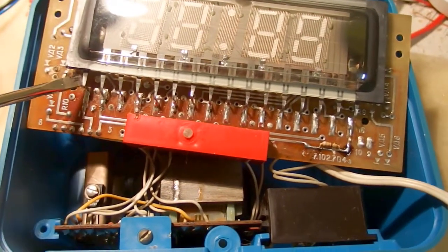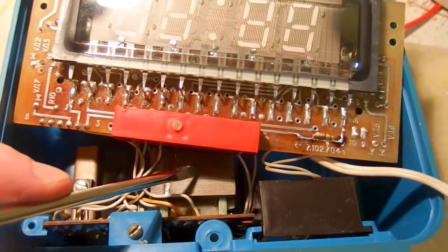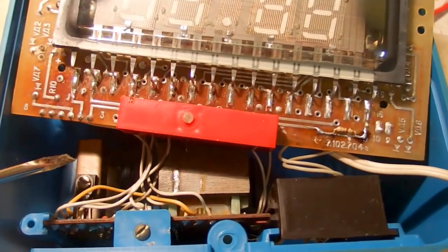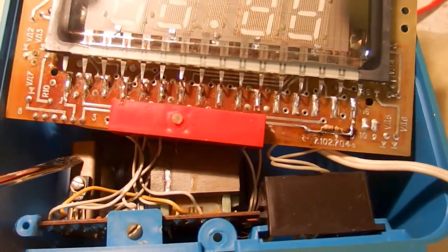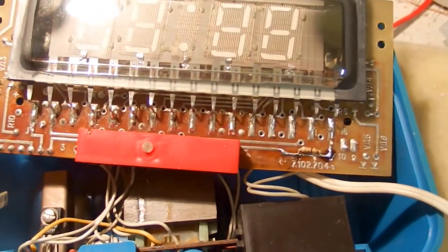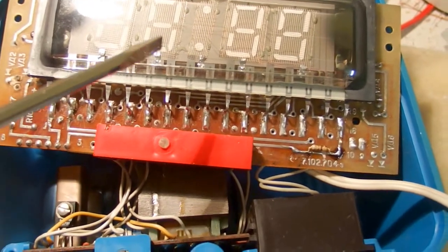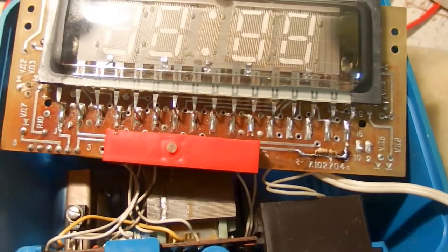And the heater filament requires 5 volts AC and it goes directly from the transformer. And there is also 27 volt DC supply for the anodes and grids. And there is also a power supply of about 9 volts for the chips. And this is just with a zener diode.